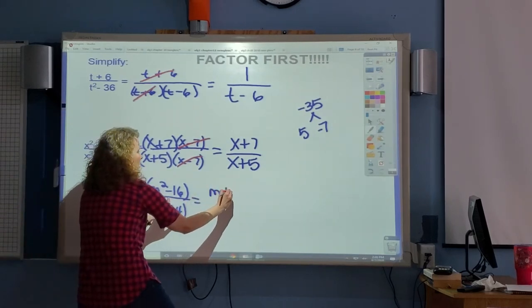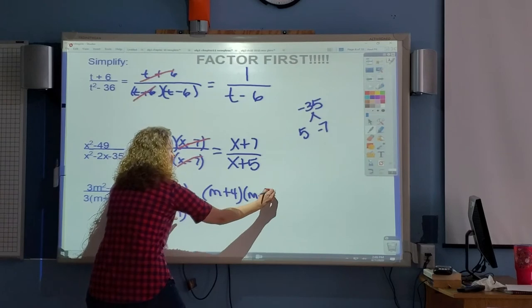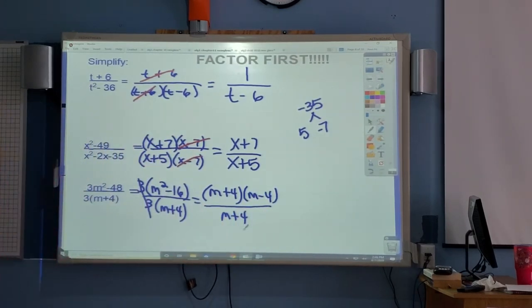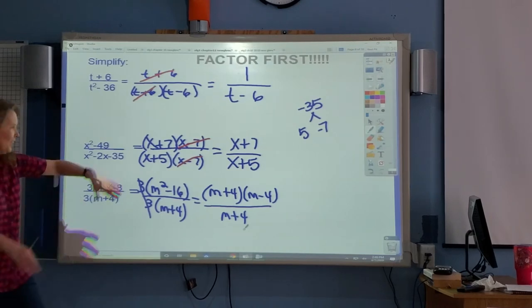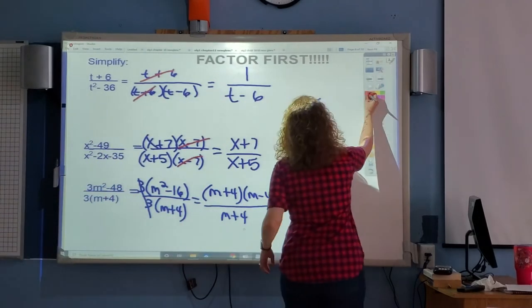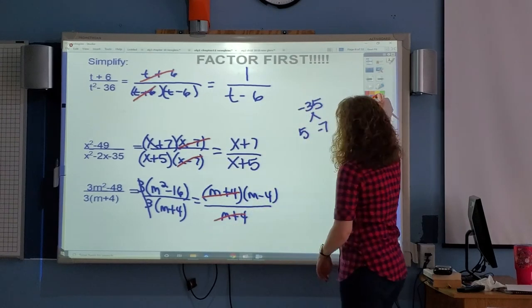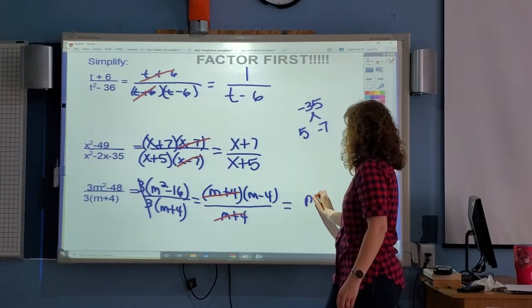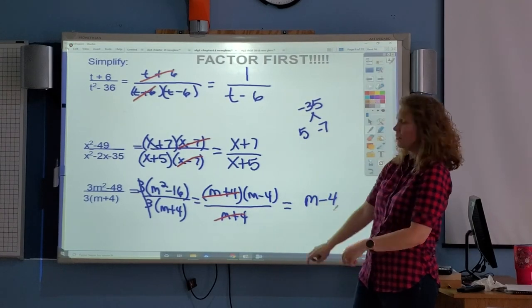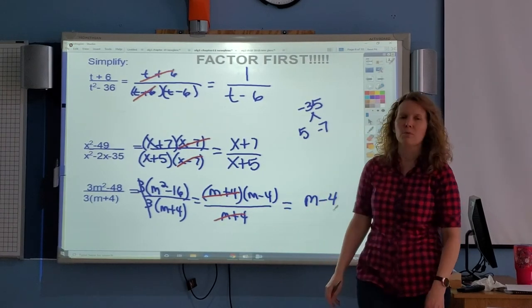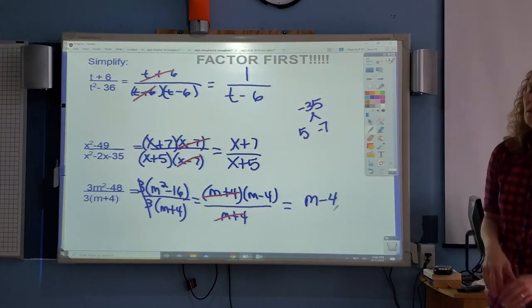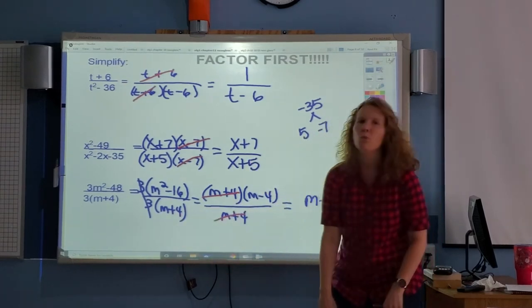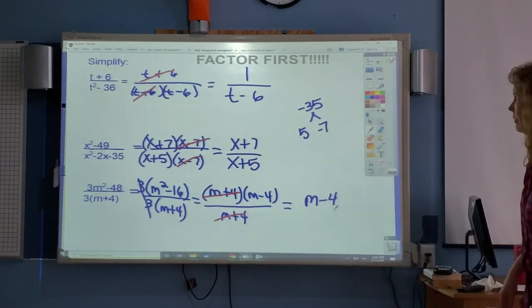So this top is n plus 4, n minus 4. I still have the n plus 4. What goes away, Jamie? The n plus 4s. Yeah, they're gone. Let me mark those off. One question, Jamie. What's left on the bottom? 1. Is it okay if you don't write it? Yeah. You can leave it like that, or you can make the fraction and put it over 1. I'll take it either way. On this one, m could not be, I like to tell you the excluded values, m could not be negative 4. Remember, you're only looking at the denominator for that.